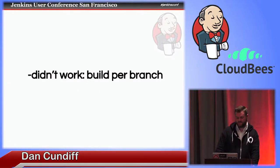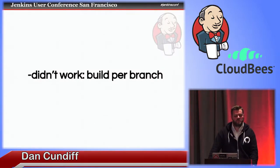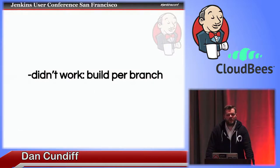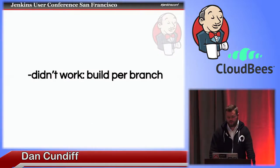Things that didn't work: build per branch. It just wasn't part of our workflow — we don't actually do branches. We tried it out for a while but learned we didn't want branches and didn't need that plugin. The lesson here is: if you're introducing Jenkins to your enterprise, fail fast and let go of the things that don't work. Try new things, and stick with the things that work.